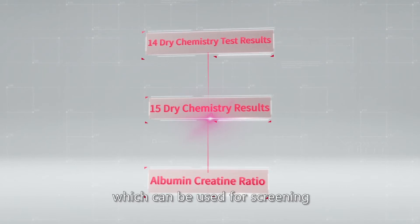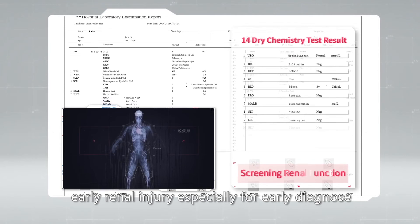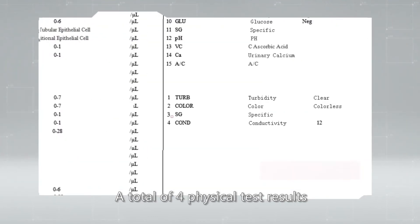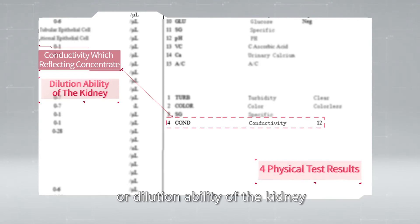Albumin-creatine ratio can be used for screening early renal injury, especially for early diagnosis of type 2 diabetic nephropathy. Total of 4 physical test results, including the conductivity, which reflects concentrate or dilution ability of the kidney.